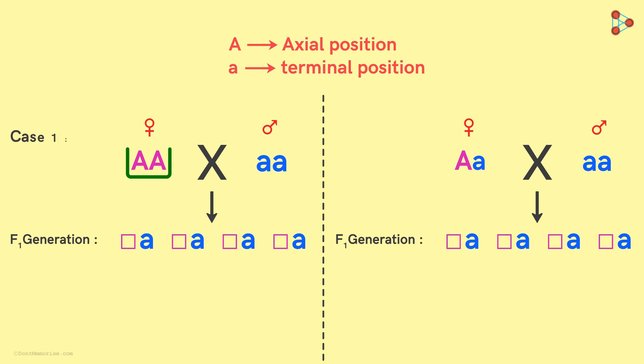Now let's look at case 1! On crossing, in the F1 generation, we obtain all the plants which have axial flower positions! This means all the plants will be heterozygous with one capital A and one lower case a!